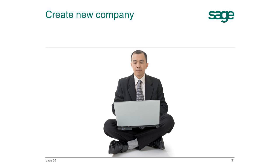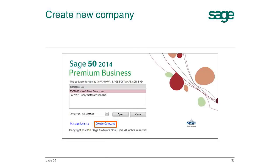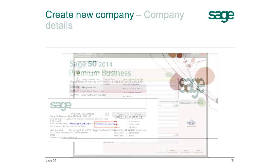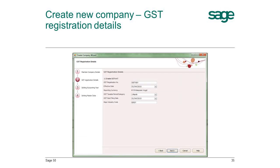I've installed Sage 50 and activated the license. How do I start using it? You can start by creating a new company via the Create Company wizard. Log in and click the Create Company link. Enter your company name, company registration number, address, and contact information — all of this will be printed on your invoice header, so ensure it is correct. You can also upload your company logo so that it is shown on your invoice. If your company is GST registered, fill in your GST registration details as well. You can come back to this later — this information will be printed on your GST03 form.